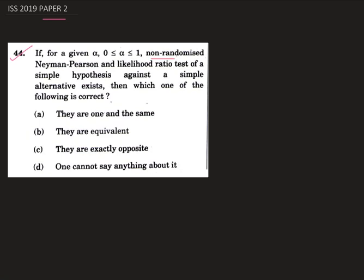We are given the non-randomized Neyman-Pearson test and the likelihood ratio test of a simple hypothesis against a simple alternative hypothesis. We need to find which of the following is correct. The first option says they are one and the same, the second says they are equivalent, the third says they are exactly opposite.